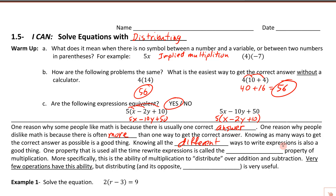Knowing all the different ways to write an expression is also a good thing. One property we use all the time is called the distributive property of multiplication — the ability of multiplication to distribute over addition and subtraction. Not many operations have this ability. Its opposite is called factoring. Both are really useful: you can take one expression, distribute it to make it look different, or factor it back to the original. Both factoring and distributing are ways of rewriting expressions that look different but represent the same thing.